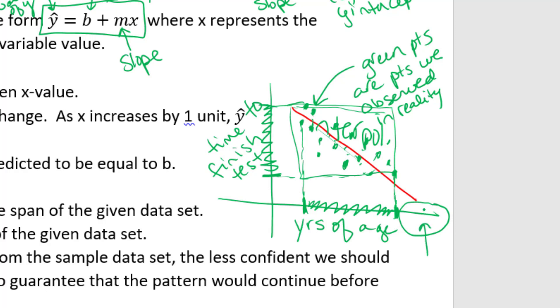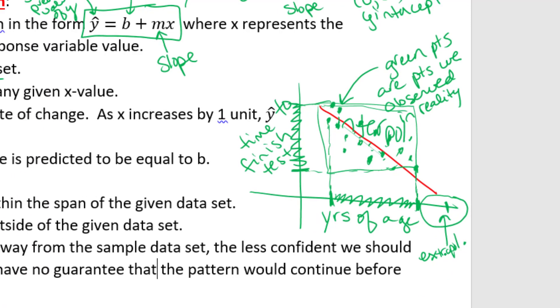So if I were to go up here and say, what time do we expect it to take for a person of this age? That would be extrapolation. I'm going beyond the observed reality and asking to extrapolate the equation line of best fit to extrapolate what would happen beyond observed data.